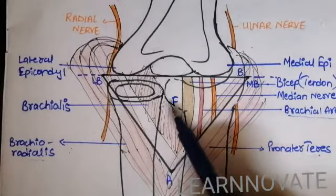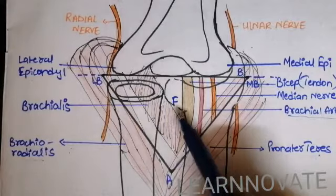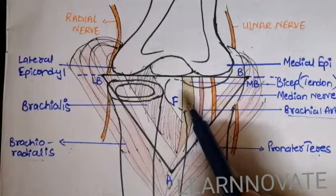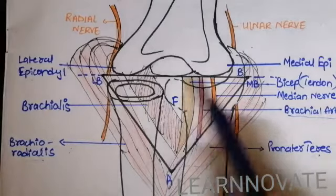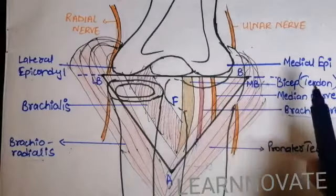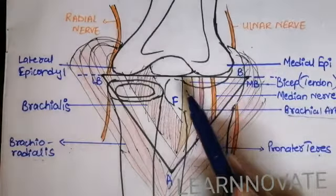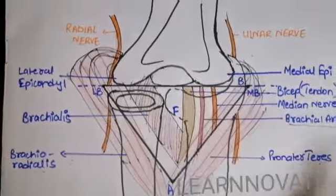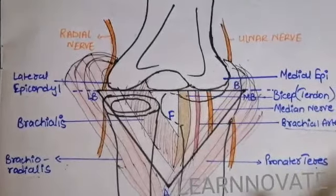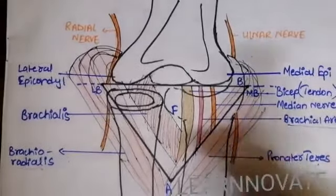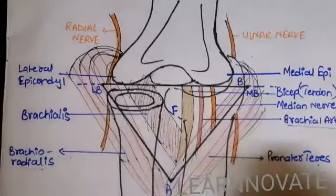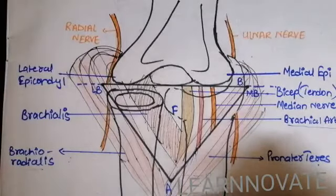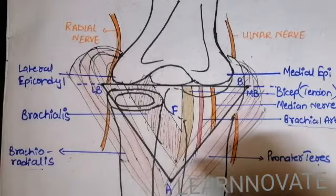Coming more medial to the brachial artery is the presence of a tendon. This tendon is of the muscle that we call as the biceps brachii. The tendon of the biceps brachii that was passed from the intertubercular sulcus of the humerus is going to be present in the cubital fossa, and passing from the cubital fossa it will attach.